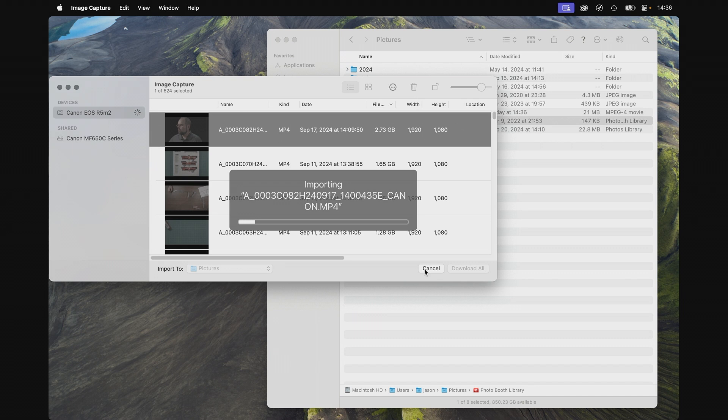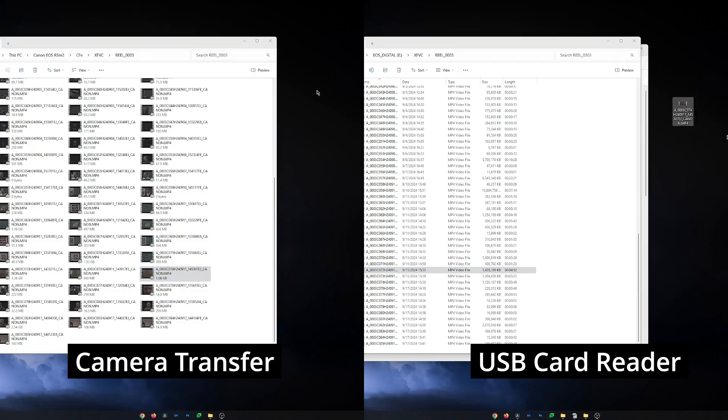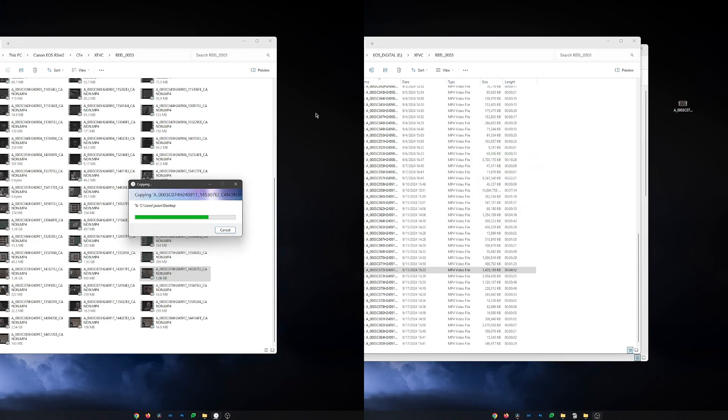I did a similar test with my R5 Mark II and a ProGrade Gold 1700 megabyte per second CFexpress card. Going through the camera, I saw only around 147 megabytes a second. While reading with my card reader, I saw in excess of 700 megabytes a second. Now, both of those tests were done on my M1 MacBook Pro, and since drivers and software implementations can always affect things, I repeated at least the CFexpress card test on my Windows machine. Now, on Windows, I did see slightly better performance across the board. The camera on its own or as the card reader delivered around 200 megabytes per second, and the card reader still performed in excess of 700 megabytes per second.